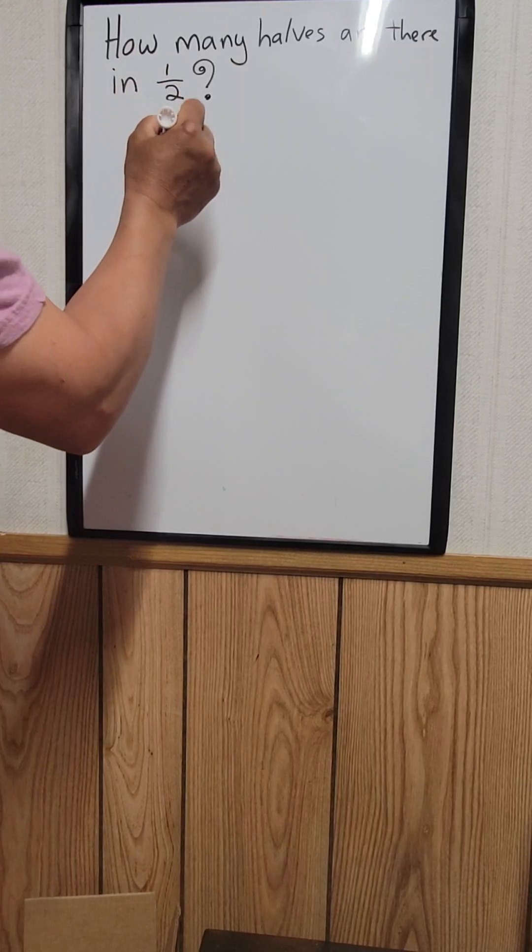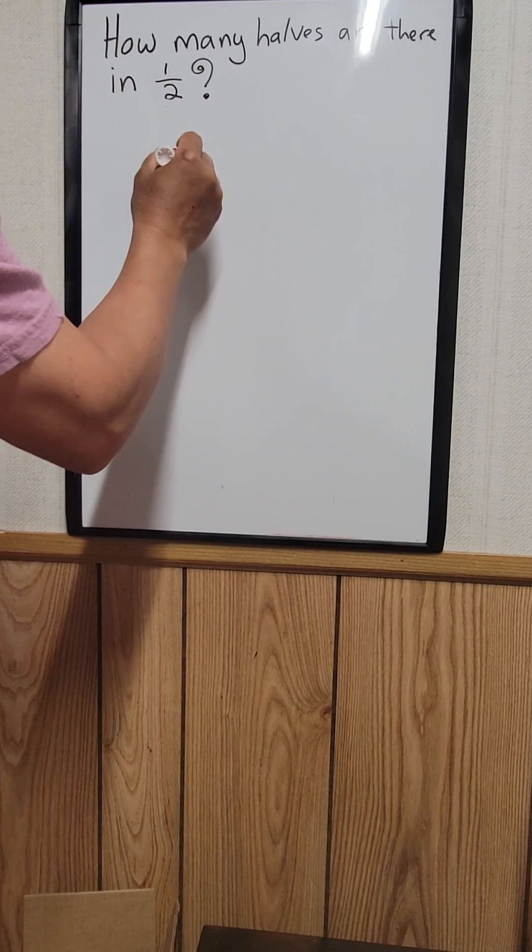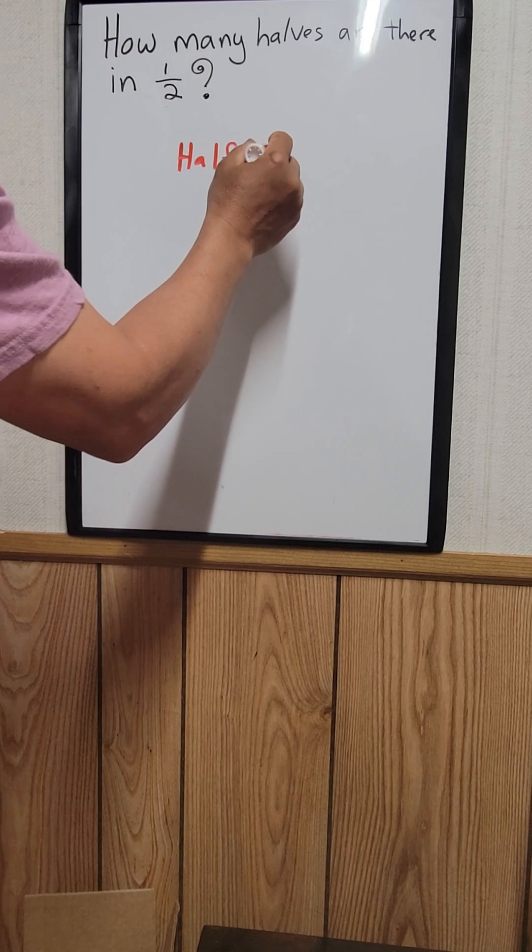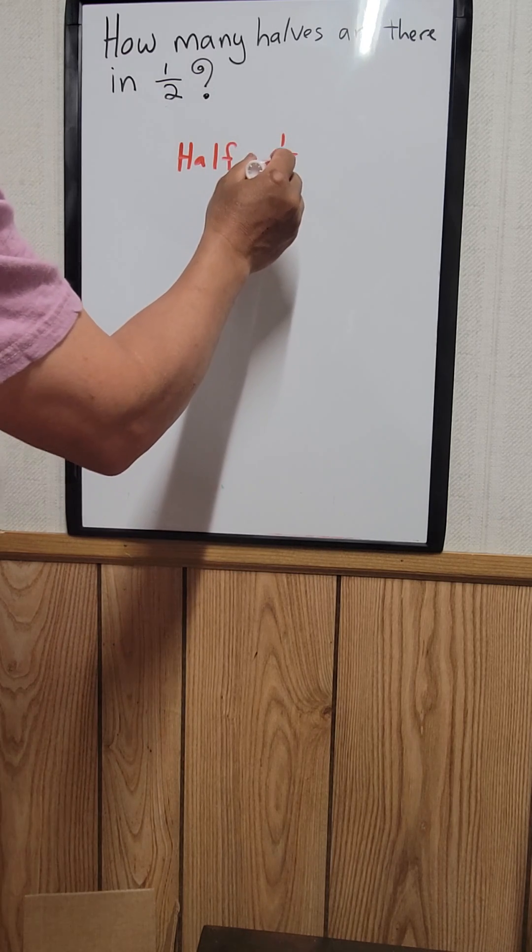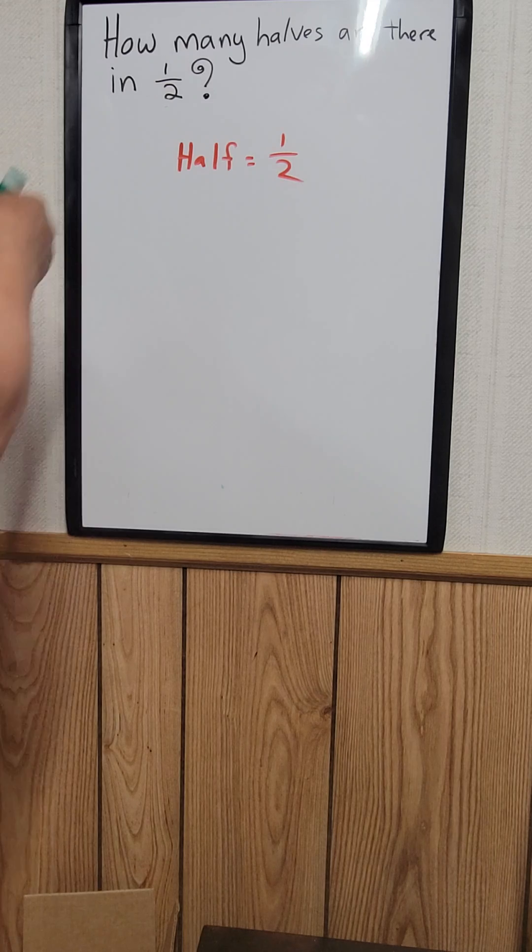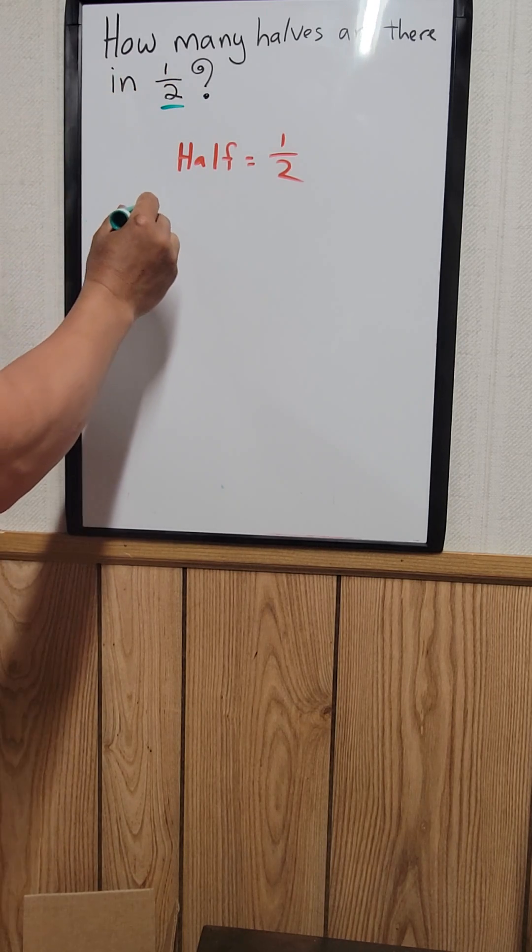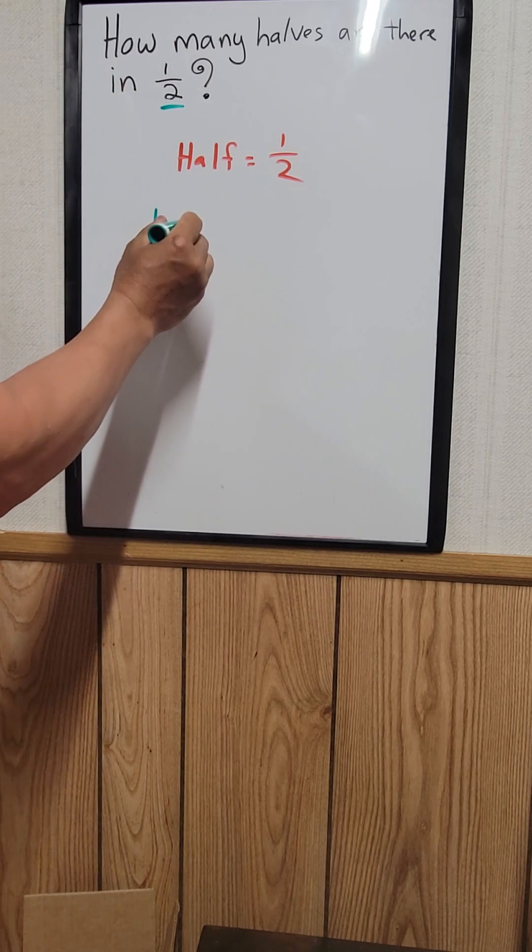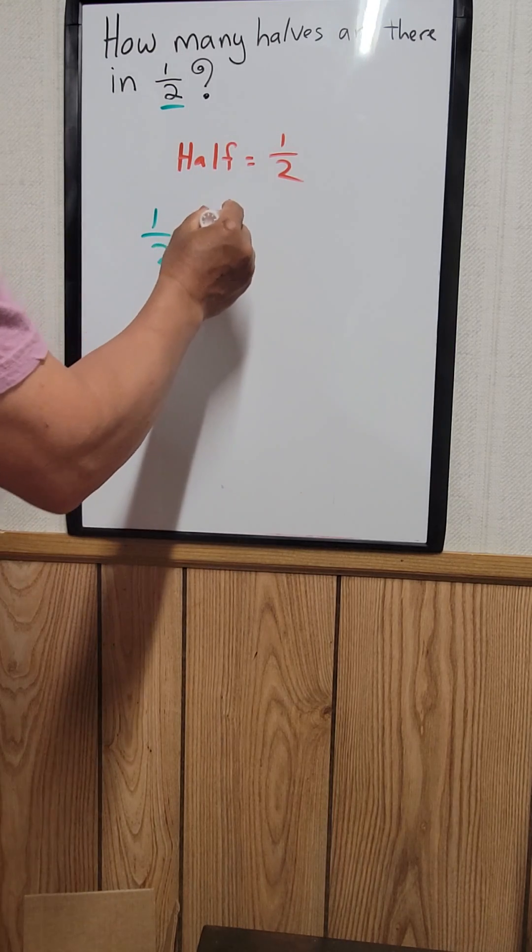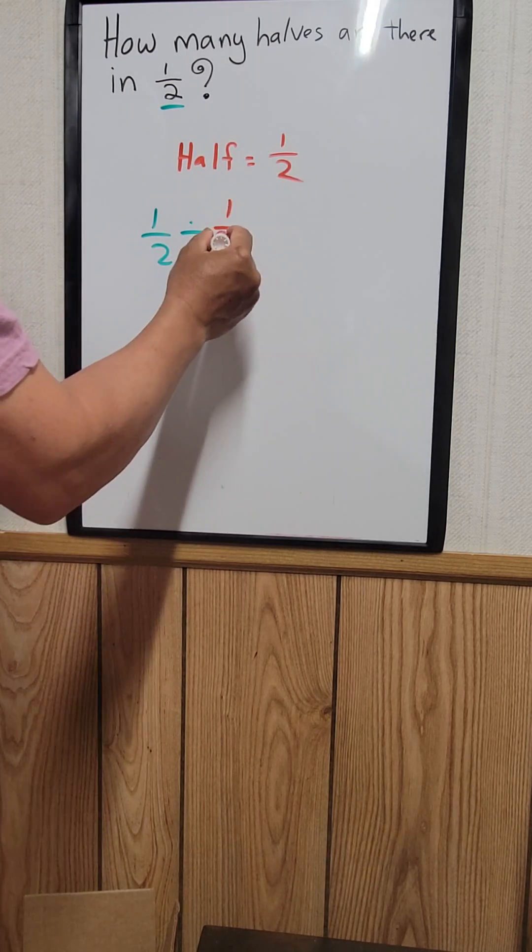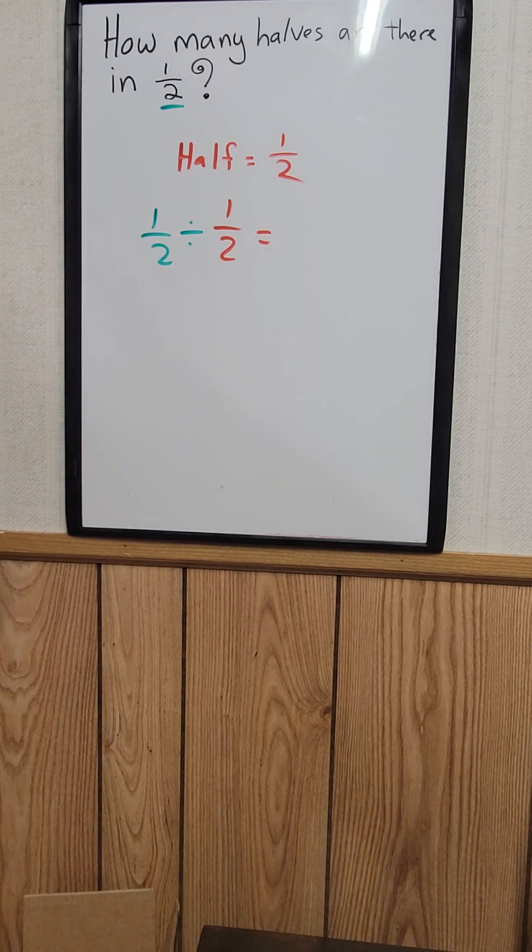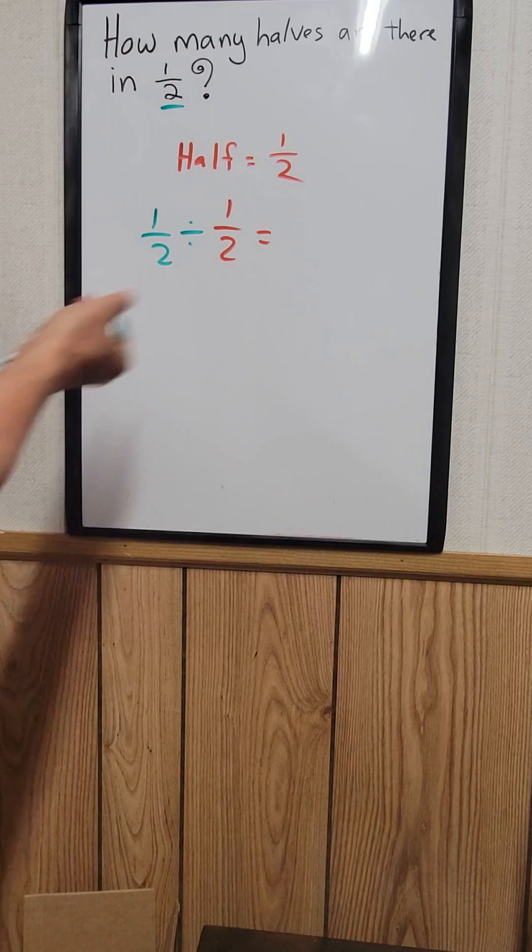You know the word half here, which equals one half. So you take this one half right here divided by this one half. And when you're dividing fraction by fraction, all you need to do is...